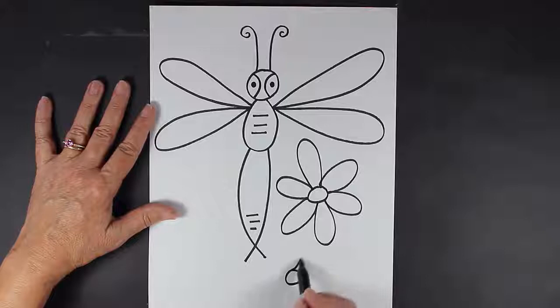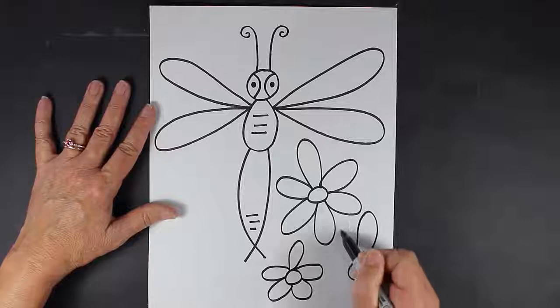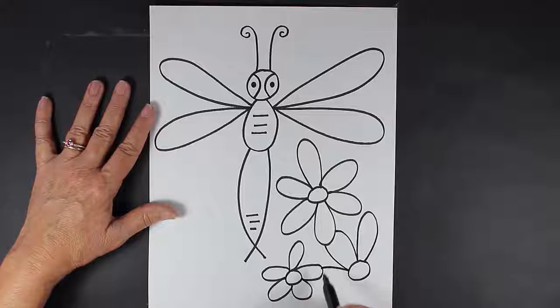So I'm going to make some larger ones and some smaller ones, kind of like my dragonfly is flying around in a garden. Oh, do you see how I ran into that flower? I skipped right over it.